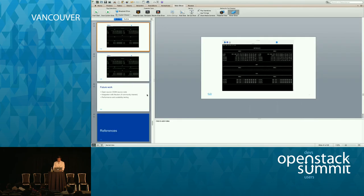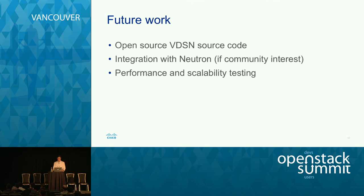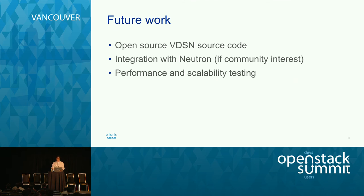That's the demo. I captured before and after slides for anyone interested. As for future work, I'd like to open source the code — I just ran out of time, but it should be up in the next couple of weeks. The implementation is actually remarkably simple and not that complex. It will integrate with Neutron very easily: you just need to add a single configuration option — the remote option — to the VXLAN interface creation command. I'd be happy to work on that if there's interest, along with performance and scalability testing.